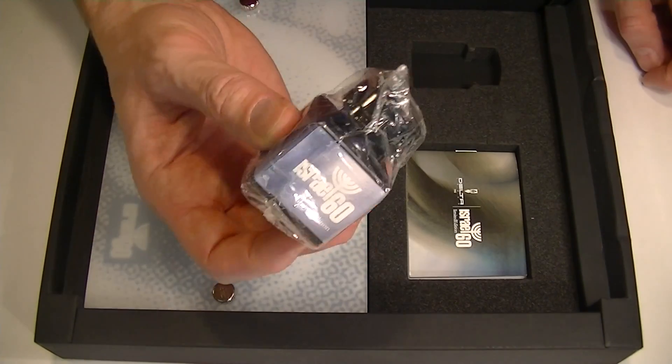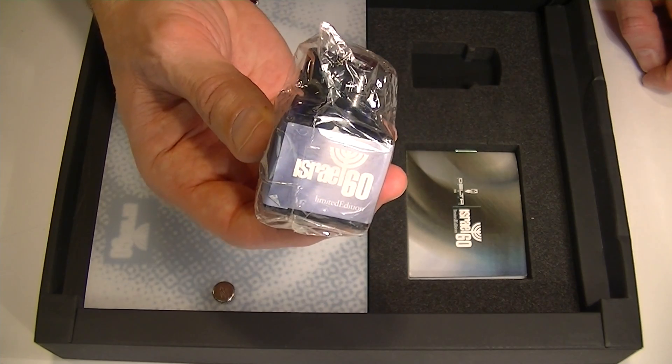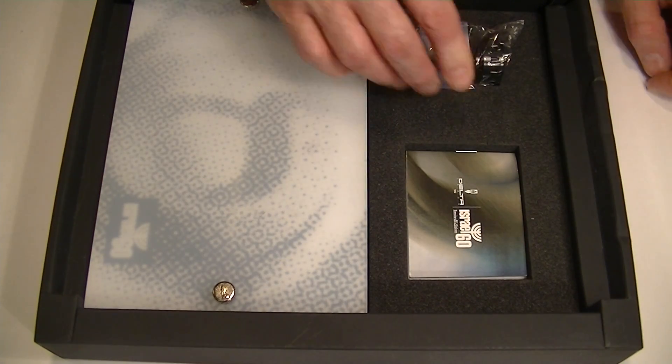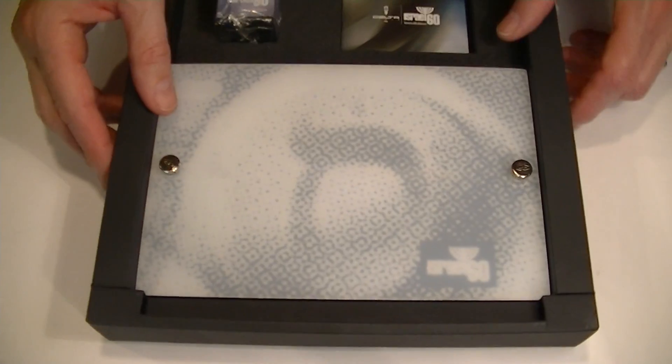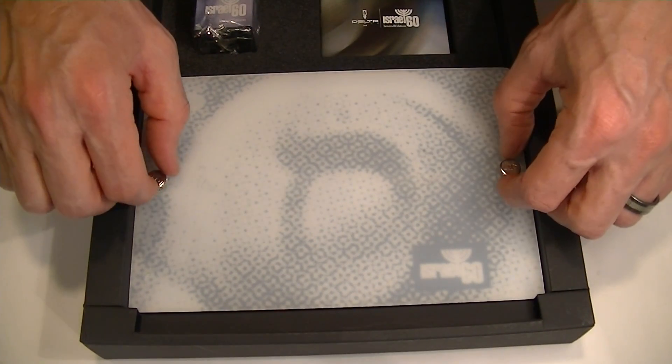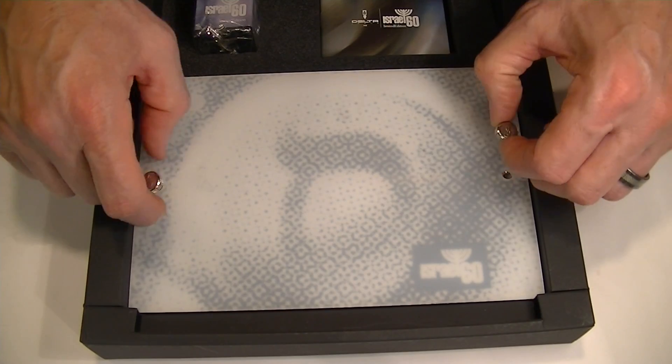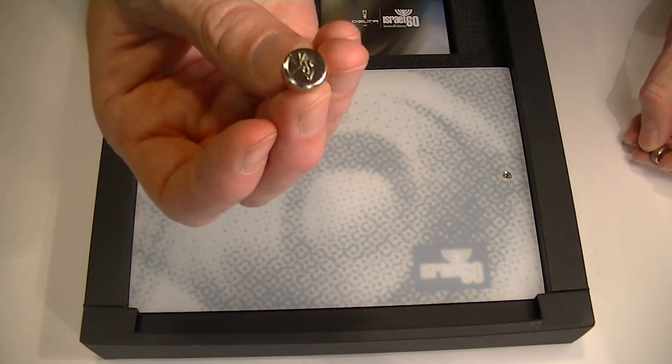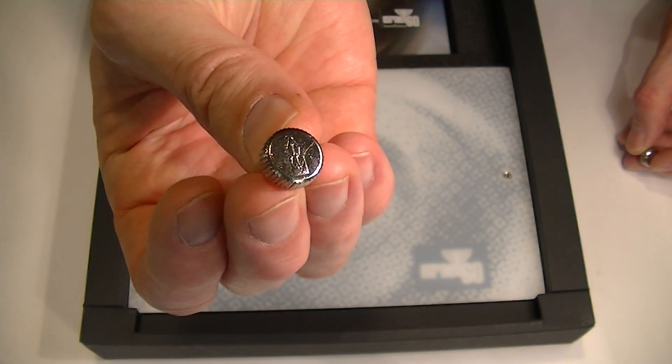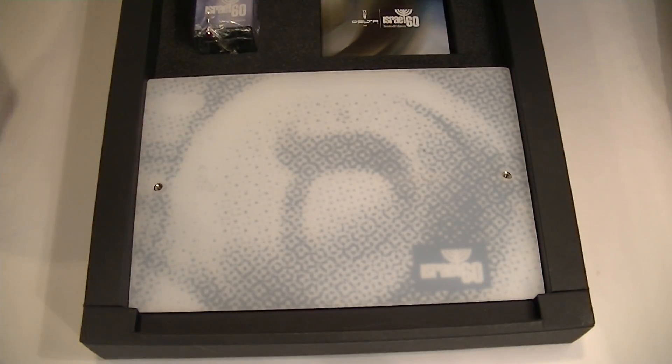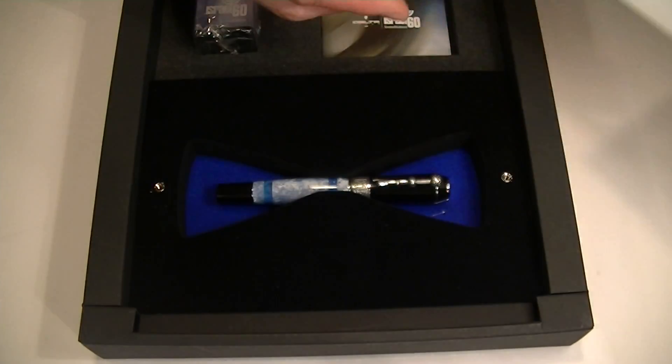Also included with this pen is one bottle of fountain pen ink. Inside the box we have a presentation case with a plexiglass top held on by two bolts. These bolts have the Delta logo on the top. That plexiglass top simply comes off.